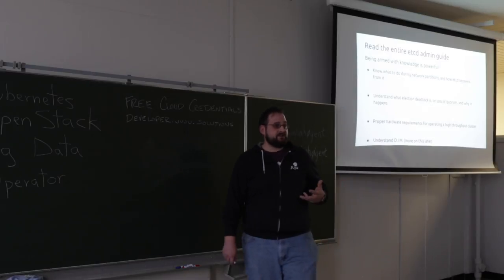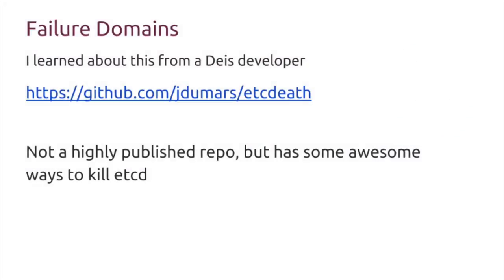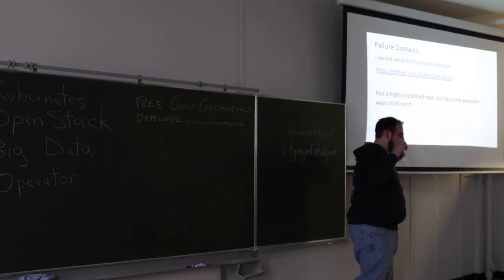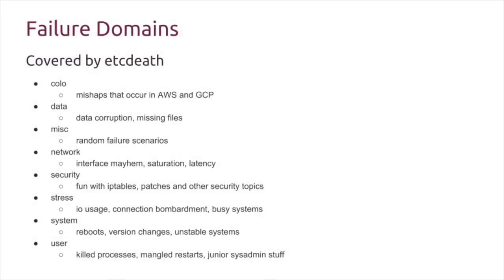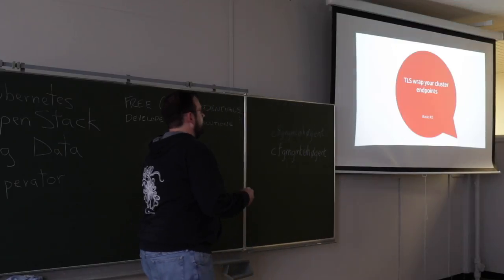You also need to understand the disposable infrastructure model — we'll touch on that more deeply later. There were also some interesting things not covered in the admin guide that I found by talking with Josh Dumars. He wrote a repository called EtcdDepth — not a highly published repository — but he has some amazing ways to kill etcd. He covers failure scenarios like colocation, data security, bad iptables rulesets that block peer communication ports, mismatched versions, and things of that nature. I highly encourage you, if you're going to run etcd in production, to check this out once you're a bit more familiar and run through the failure domains.